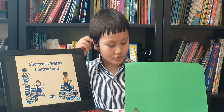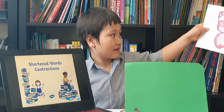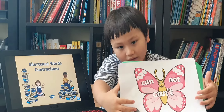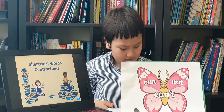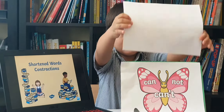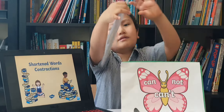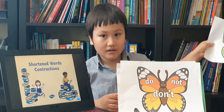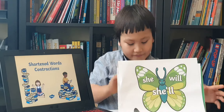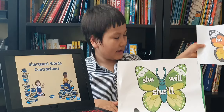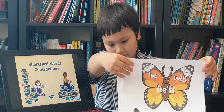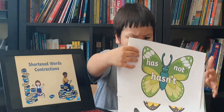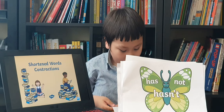So here are the examples. Cannot makes can't. Do not makes don't. She will makes she'll. He will makes he'll. Has not makes hasn't. Did not makes didn't.